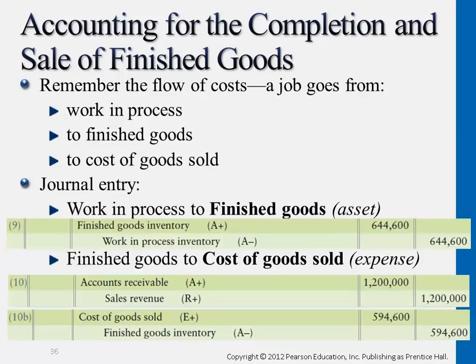When it comes to year end, we go back to the allocation issue. When it comes to year end, we want to somehow adjust the portion that we either misallocated — we allocated too little, or the portion that we over-allocated.